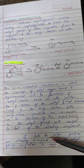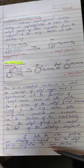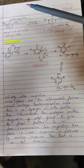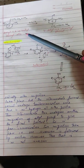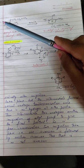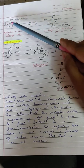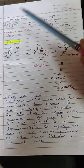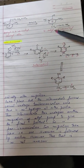If both ortho positions are occupied, then the allyl group shifts to the para position, as we will see in the next example. In allyl 2,6-dimethylphenyl ether, both ortho positions are occupied, but the reaction still takes place and the allyl group shifts to the para position.